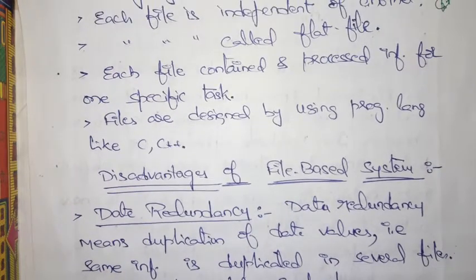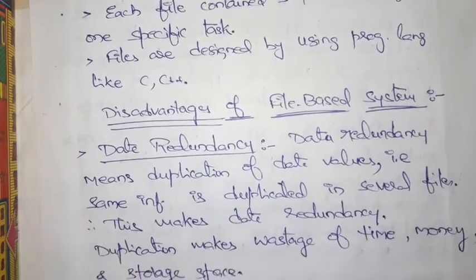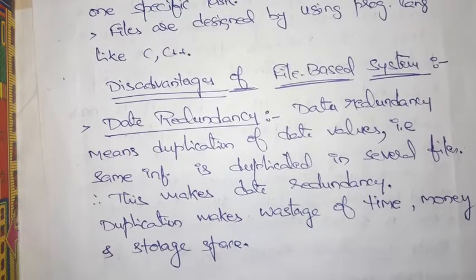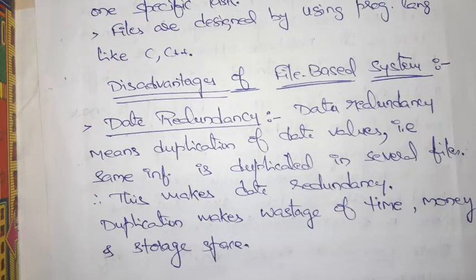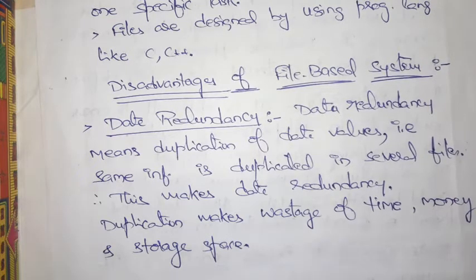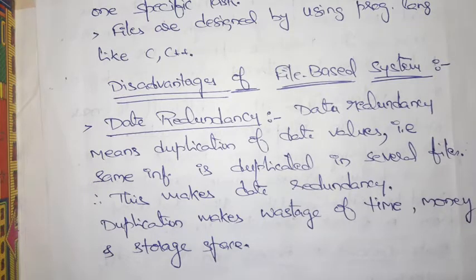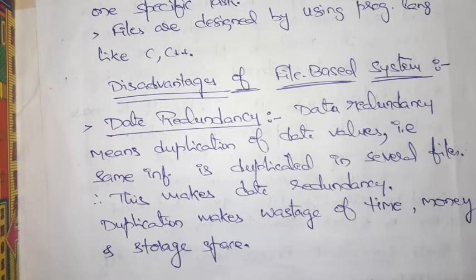If we want to store some information, all the information of an organization will be stored in different files. Each file is independent of another, each is called a flat file, and these files are designed using programming languages like C and C++. If you are using a file-based approach to maintain data, some drawbacks are there, which we will see now.